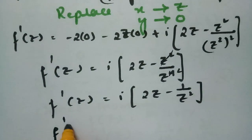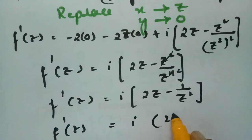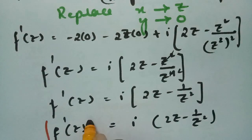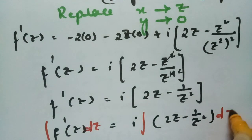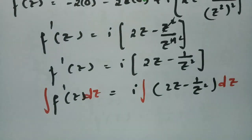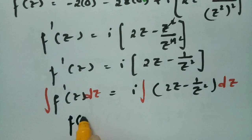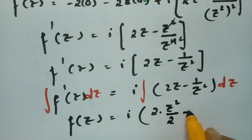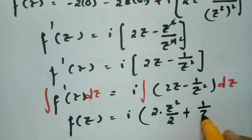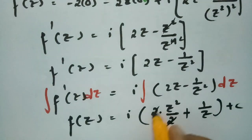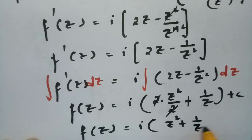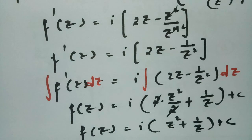Now f'(z) equals i times of 2z minus 1 by z square. If I integrate on both sides, integration and derivative cancel, and f(z) equals i times of 2 times z square by 2 minus, and for minus 1 by z square the integral is plus 1 by z, plus constant c. So f(z) equals i times of z square plus 1 by z plus c. This is our analytic function.